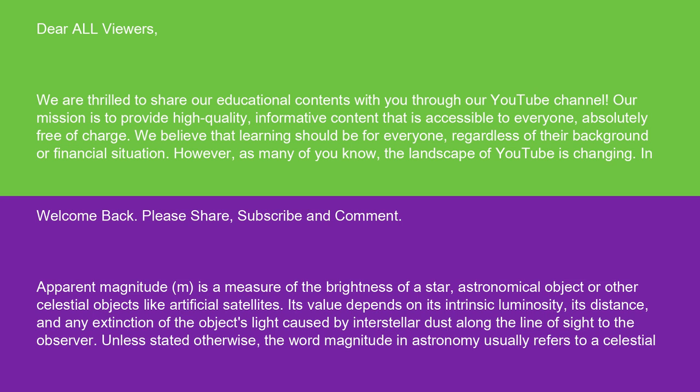Welcome back. Please share, subscribe, and comment. Apparent magnitude M is a measure of the brightness of a star, astronomical object, or other celestial objects like artificial satellites. Its value depends on its intrinsic luminosity, its distance, and any extinction of the object's light caused by interstellar dust along the line of sight to the observer.